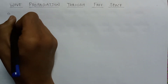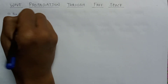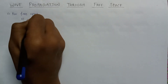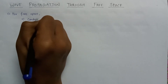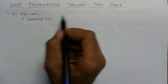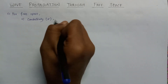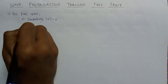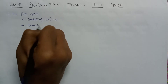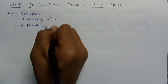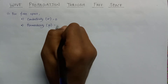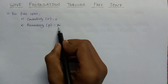For free space, the first parameter is conductivity, represented by sigma. For wave propagation in free space, sigma is always equal to zero. The second parameter is permeability, represented by mu. In free space, mu is always equal to mu zero, where mu zero represents the permeability of free space.